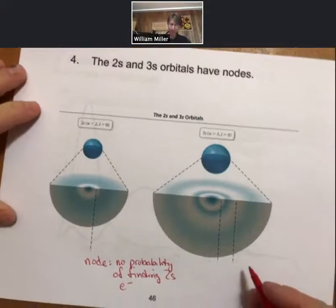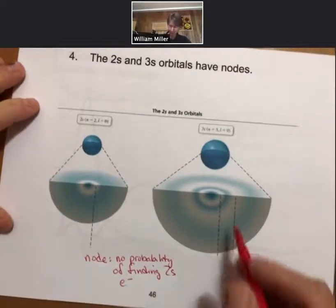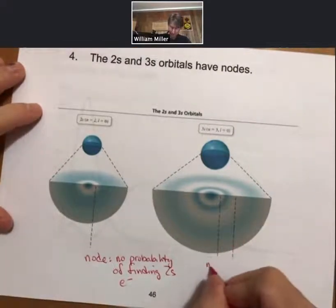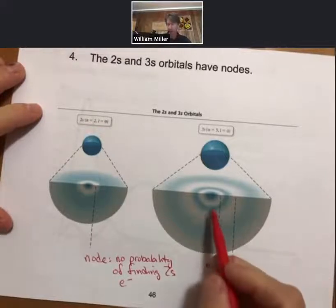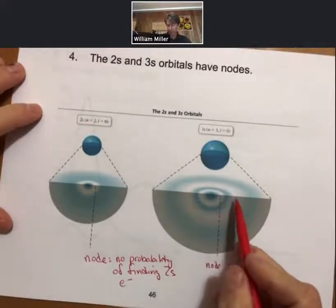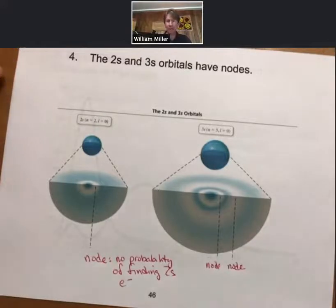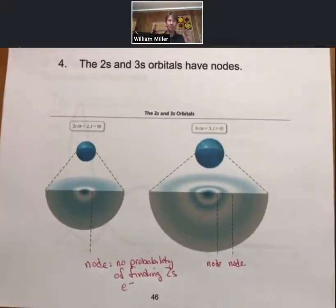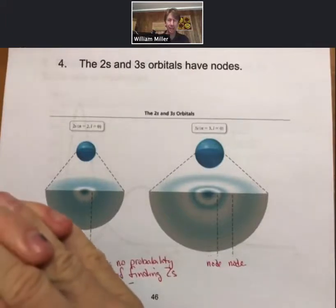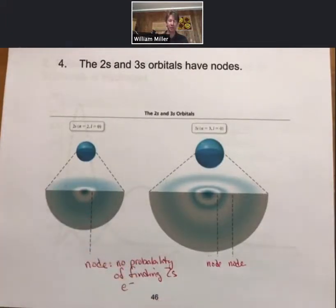And then in the 3s, there'll be two nodes. And these nodes will be approximately where the 1s and the 2s electrons are. So you can think of the 3s electrons. So the sphere is getting bigger for n equals 3. But within that sphere, there's structure that attempts to keep the electrons, negative things, as far apart as possible.